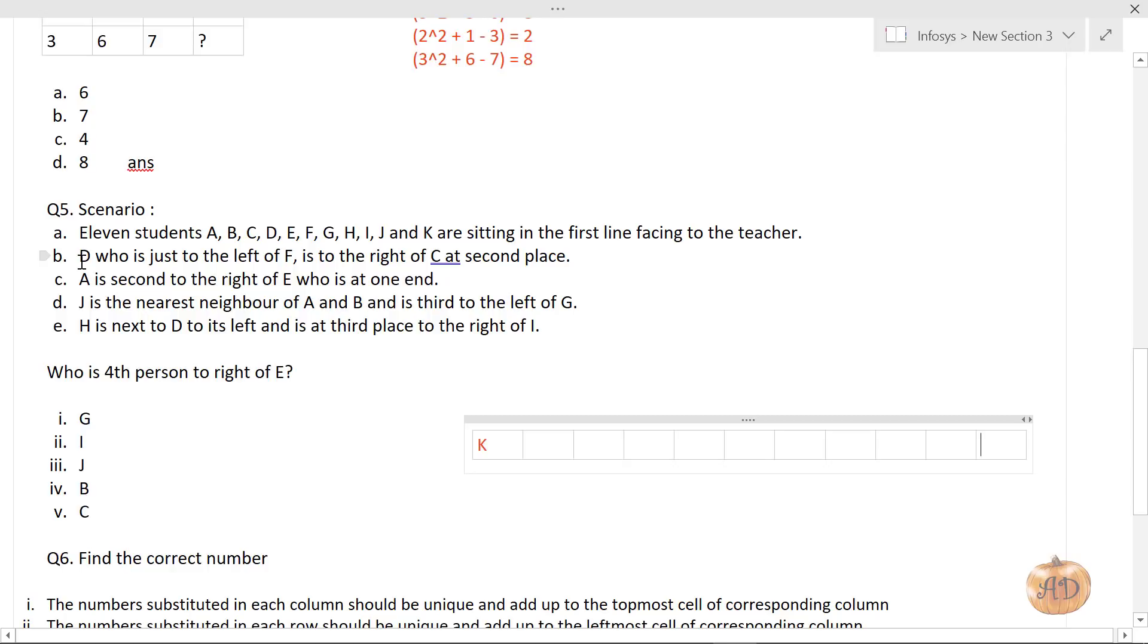B who is just to the left of F. So B is just left of F, that's one condition. It says D is to the right of C at second place. So we place C here. This statement is denoting student D: B who is just left of F is to the right of C. So D should be at second place from C. This is the B point condition.